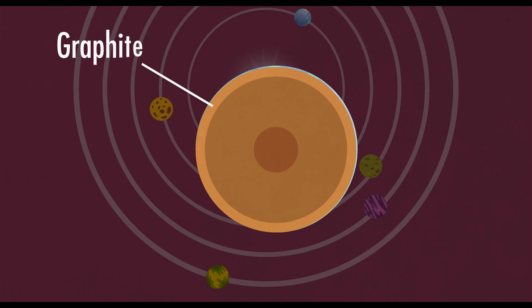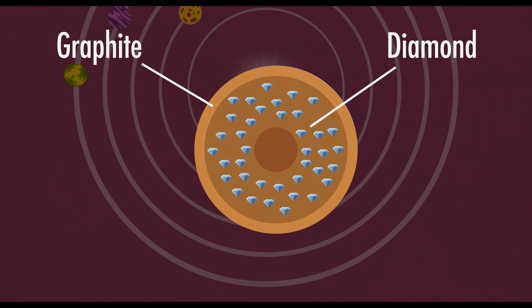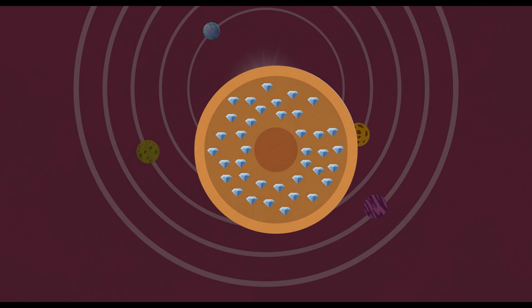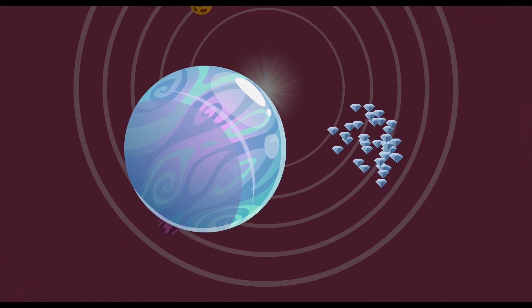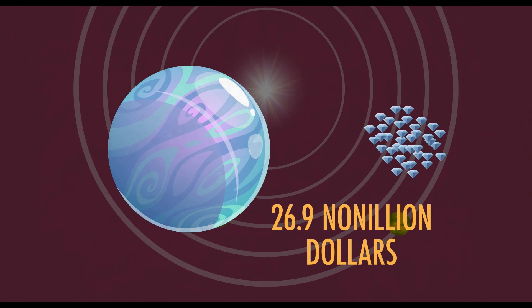While the surface is made up of a layer of graphite, beneath it is a thick layer of diamond, similar to how the Earth is made up of a crust sitting above a thick layer of mantle. The diamond is in such a large quantity that, if it could all be mined, it would be worth as much as $26.9 nonillion dollars. That's one followed by 30 zeros.